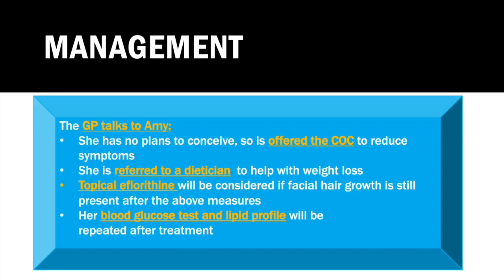Specifically in Amy's case, the GP prescribed a combined contraceptive pill — in this case Microgynon. Other options discussed include the Mirena coil, or alternative combined pills such as Yasmin and Lucette, both of which contain drospirenone, an anti-androgen, which would also help with acne. The reason for the combined contraceptive pill is to reduce Amy's symptoms of heavy menstrual bleeding and pain, as well as to improve her acne.